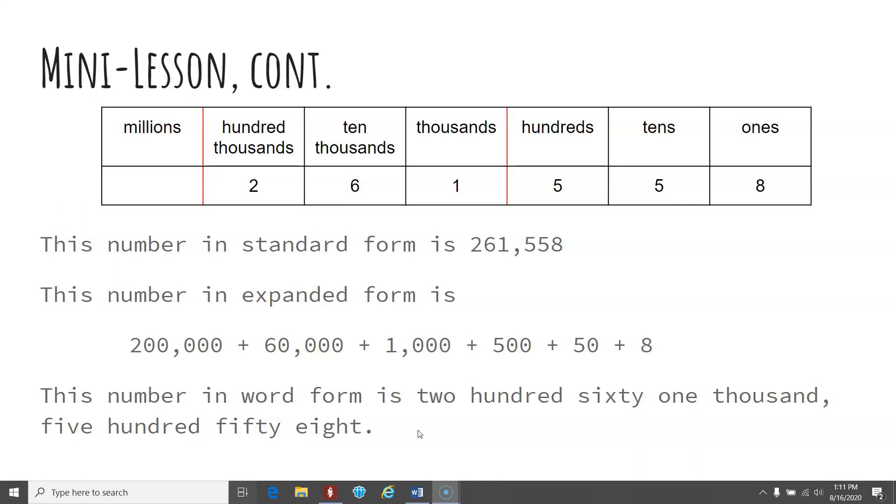We have a 1 in the thousands for 1,000. We have a 5 in the hundreds for 500, a 5 in the tens for 50, and 8 ones for 8. So the way we read that in word form is 261,558.